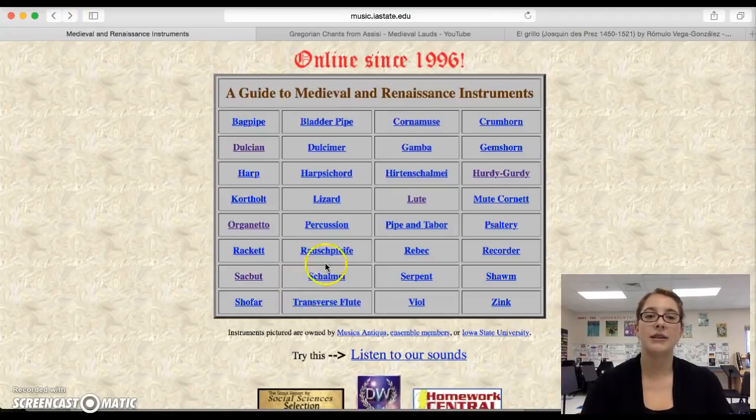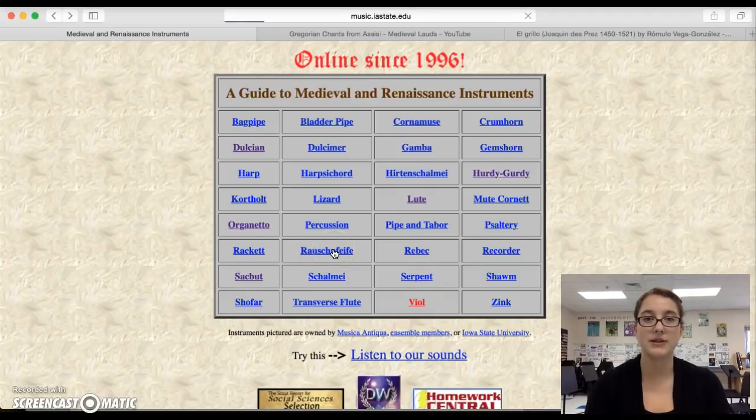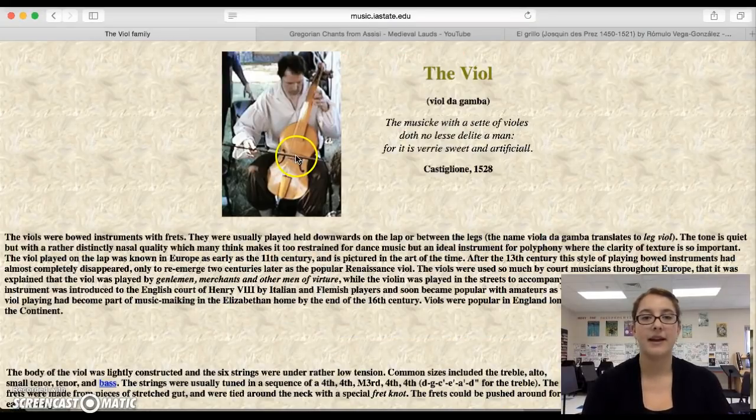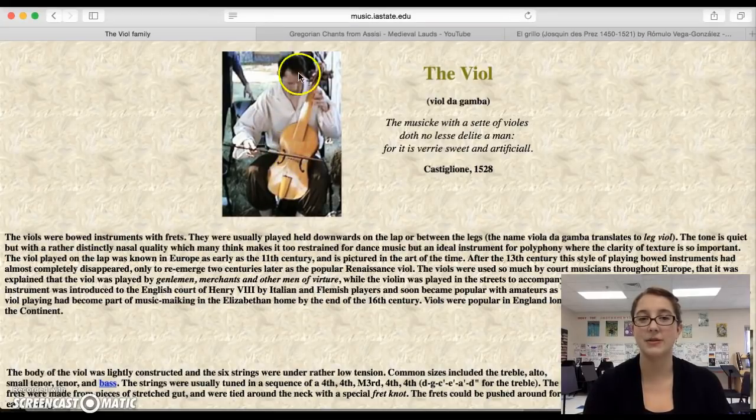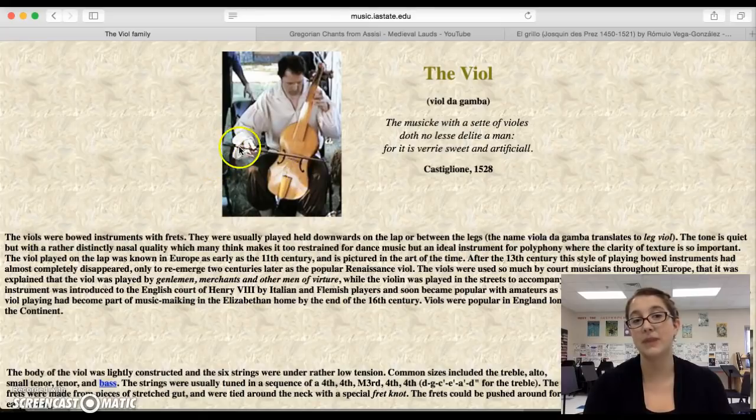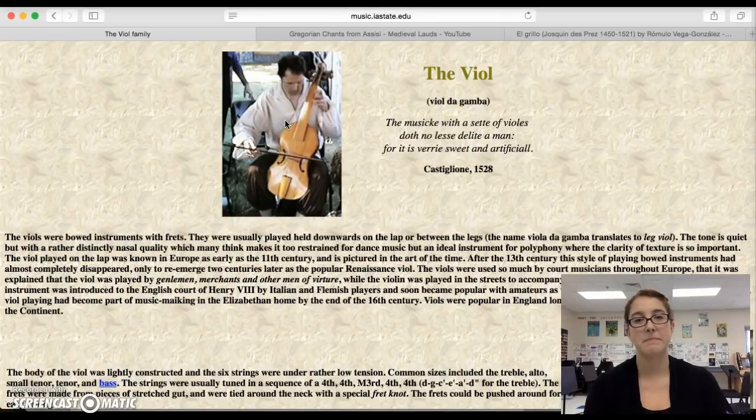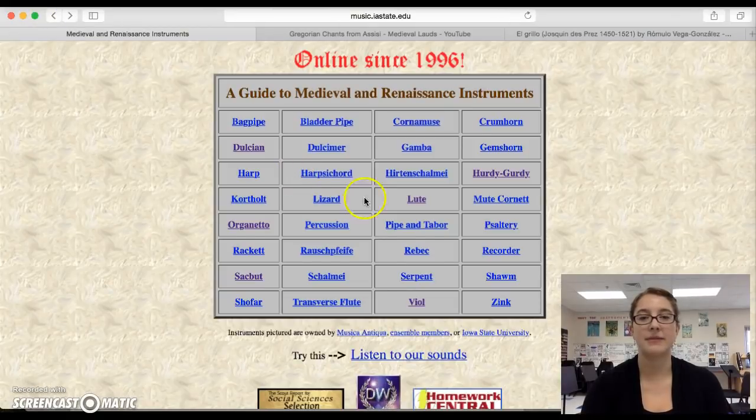And now let's listen to the viol, which is as similar as we can get to our instruments. This is the viol de gamba, which means, de gamba means the legs. So it's the viol of the legs. Notice he's holding it in between his legs, and he's playing it with a bow, but a little bit differently than we do. And he has a little bit of a funky, different shape to it.